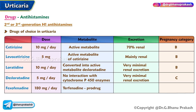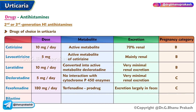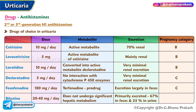Fexofenadine dose: 180 milligrams per day; terfenadine is the pro-drug, excretion is largely in feces, pregnancy category C. Bilastine dose: 20 to 40 milligrams per day; does not undergo any significant hepatic metabolism, primarily excreted intact — approximately 67% in feces and 33% in urine.